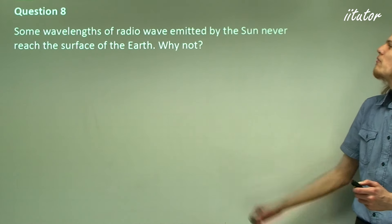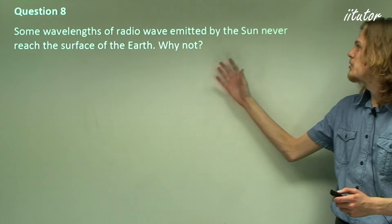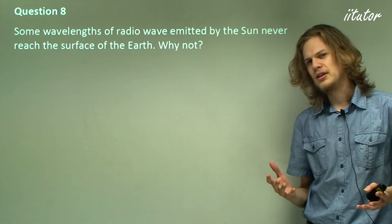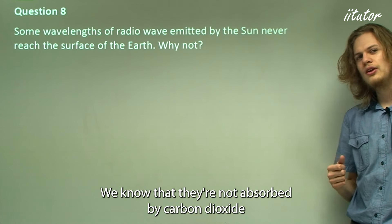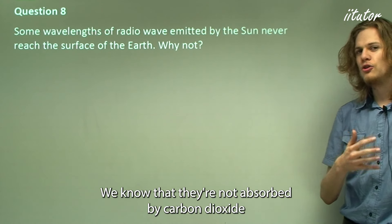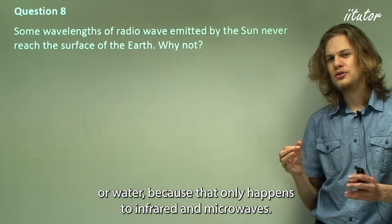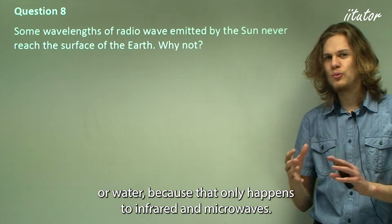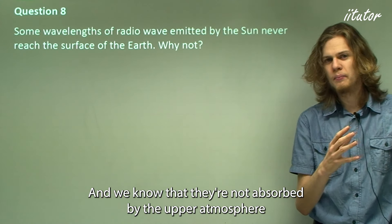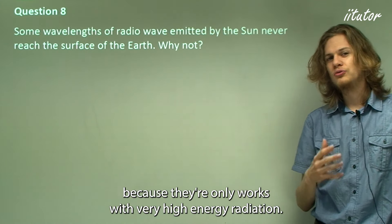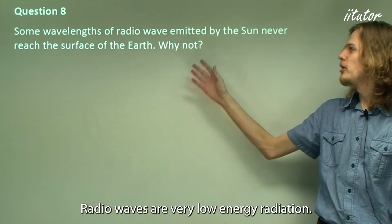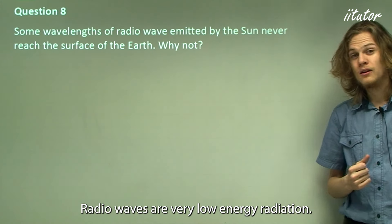Question 8: Some wavelengths of radio waves emitted by the sun never reach the surface of the Earth. Why is this? We know they're not absorbed by carbon dioxide or water — that only happens to infrared and microwaves. And they're not absorbed by the upper atmosphere — that only works for very high-energy radiation, while radio waves are very low-energy.